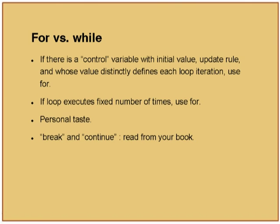Simple concept of good programming practice is introduced in the context of a problem, not as an independent rule number 13B or 15A — because people find it easier to remember rules when explained through examples. He has a comparison slide on for versus while and when to use what: if there is a control variable with initial value, update rule, and whose value distinctly defines each loop iteration, use for. If the loop executes a fixed number of times, use for. You can simulate for using while also, but that is meaningless — so you are distinguishing between two approaches of setting up iteration and stating that both are equivalent, however in one case this may be better, in another case the other.